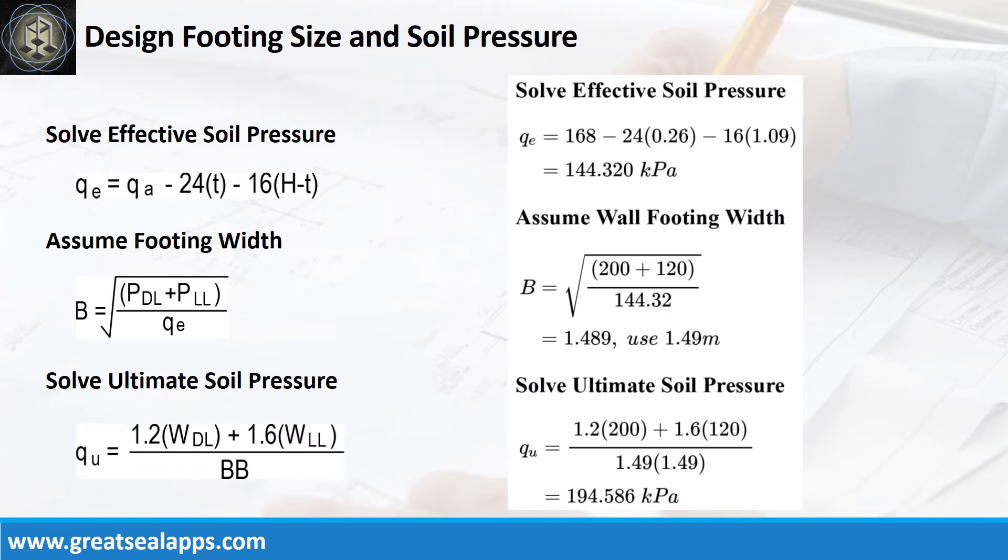Given allowable soil pressure equals 168 kPa, depth from natural grade line equals 1350 mm, and assumed footing depth equals 260 mm, the effective soil pressure is 144.32 kPa. Given actual dead load equals 200 kN and actual live load equals 120 kN, the footing width is 1.49 meters, and the ultimate soil pressure is 194.586 kPa.